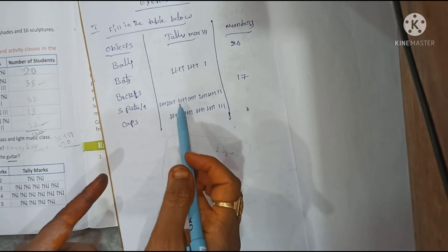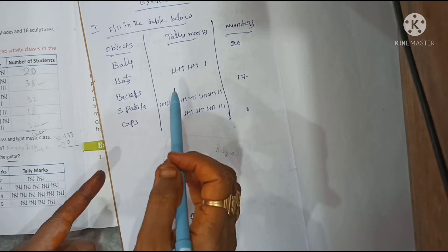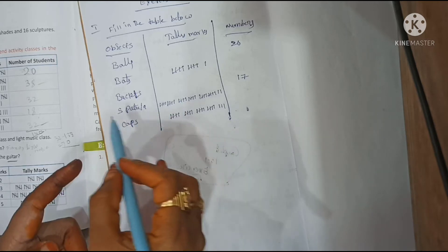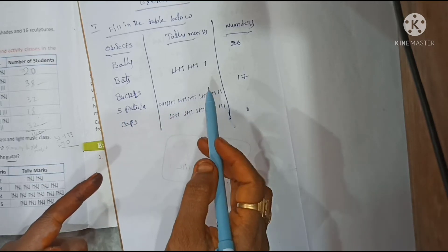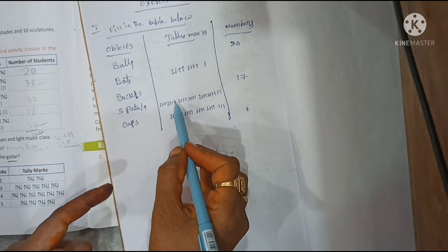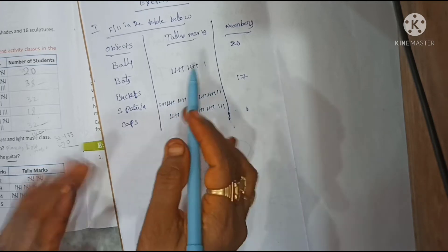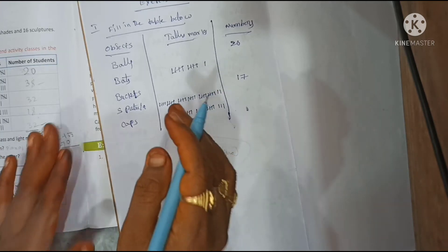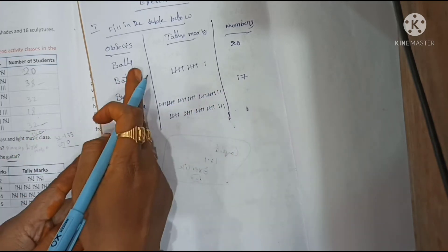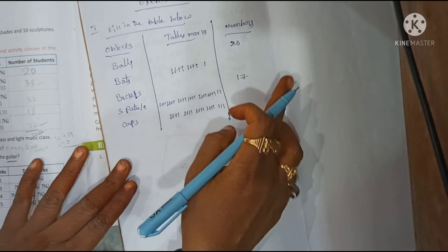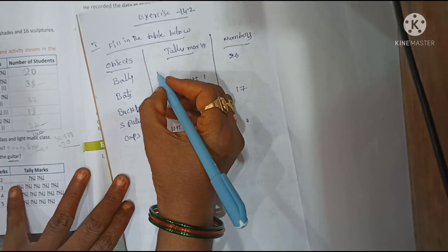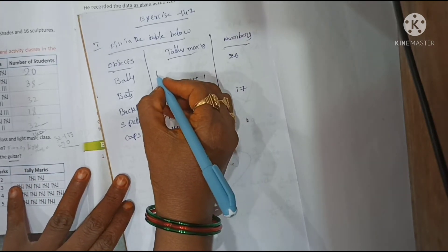Now, tally marks are written as: one, two, three, four — written as straight lines — and the fifth one as a cross type diagonal. Now for balls, 20 is given. How do we write 20 in tally marks?